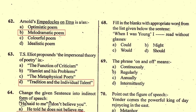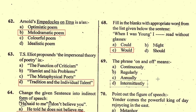Question number 69: The phrase 'on and off' means — the right option is D, intermittently.